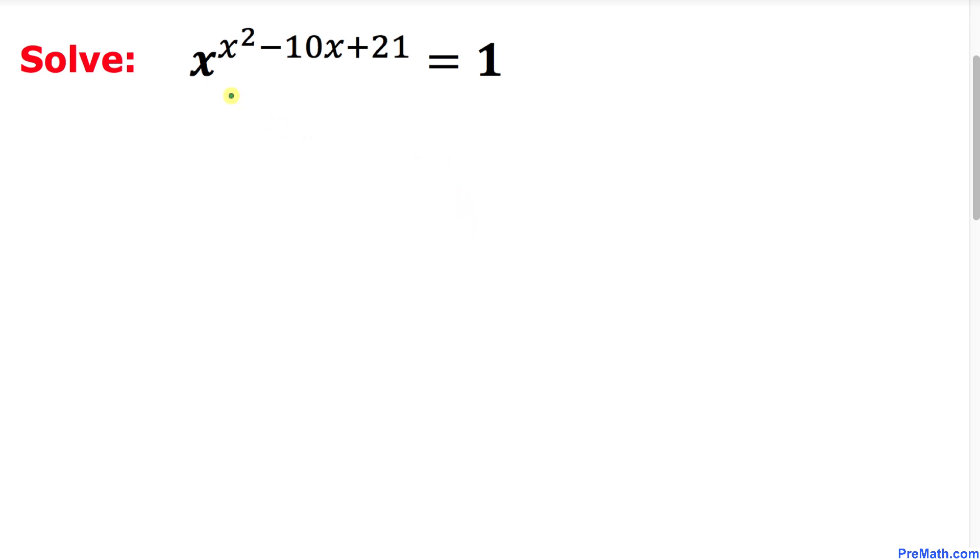In order to find the value of x we are going to consider multiple cases and here's our case 1. In this scenario we know that x power 0 is always equal to 1. So that means our exponent x square minus 10x plus 21 must be equal to 0.